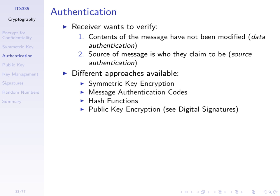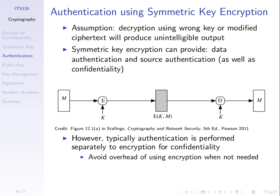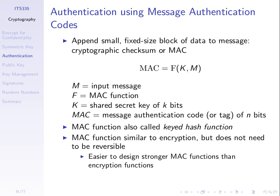A key part for authentication used in the internet is digital signatures. Message authentication codes are similar to symmetric key encryption. What we do is we have some algorithm — some function F. We take our message M, we take a shared secret key K, and we apply some algorithm to get some code called a MAC. A message authentication code is an output — usually a short, maybe 128-bit value.